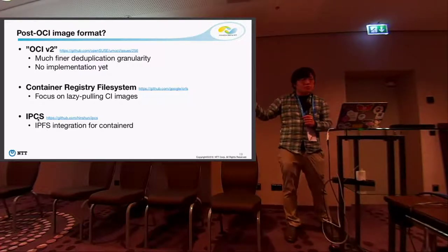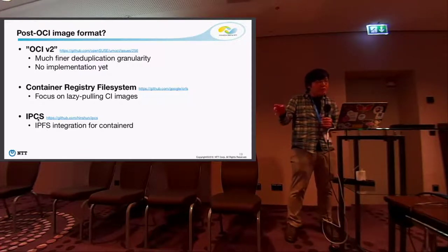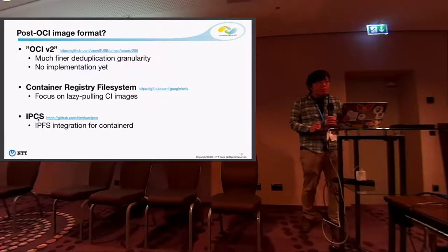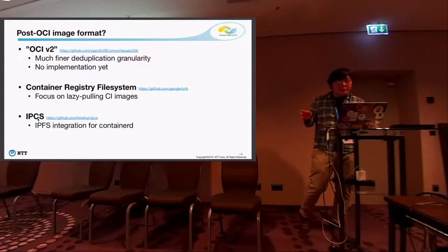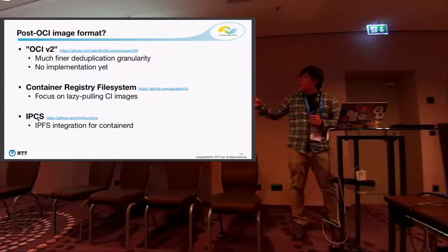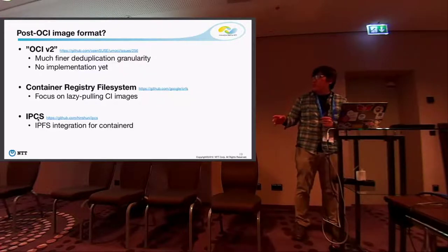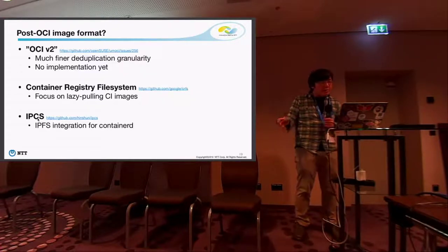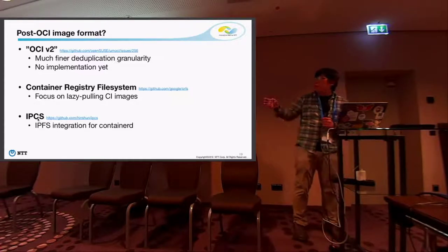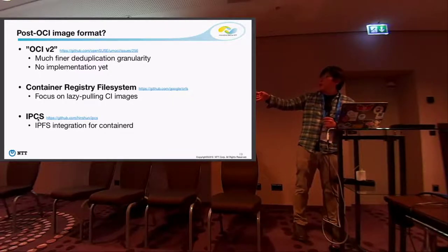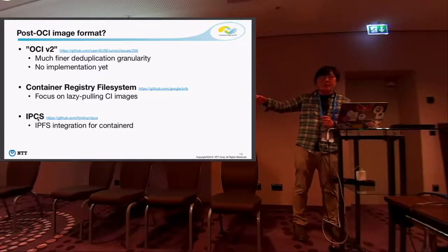OCI v2 is expected to implement much finer data deduplication granularity. Google is also working on a very similar project called containerized file systems that focuses on lazy-fetching images. There's also a similar project called IPCS, which is IPFS integration for containerd, so you don't even need to pull images explicitly because all objects are shared across the containerd nodes in the cluster using IPFS or P2P storage.